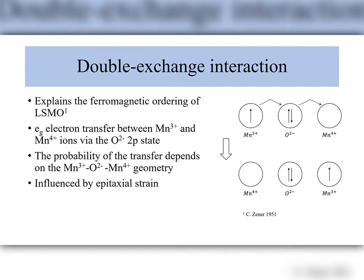The ferromagnetic ordering of LSMO has been explained by the Zener double exchange interaction, where an electron transfer between manganese 3+ and manganese 4+ ions takes place via the oxygen in between, as shown in the sketch on the right. The probability of this transfer is dependent on the manganese-oxide geometry, and as such is influenced by epitaxial strain. Thus, the ferromagnetic properties of LSMO are dependent on the epitaxial strain of the thin film.